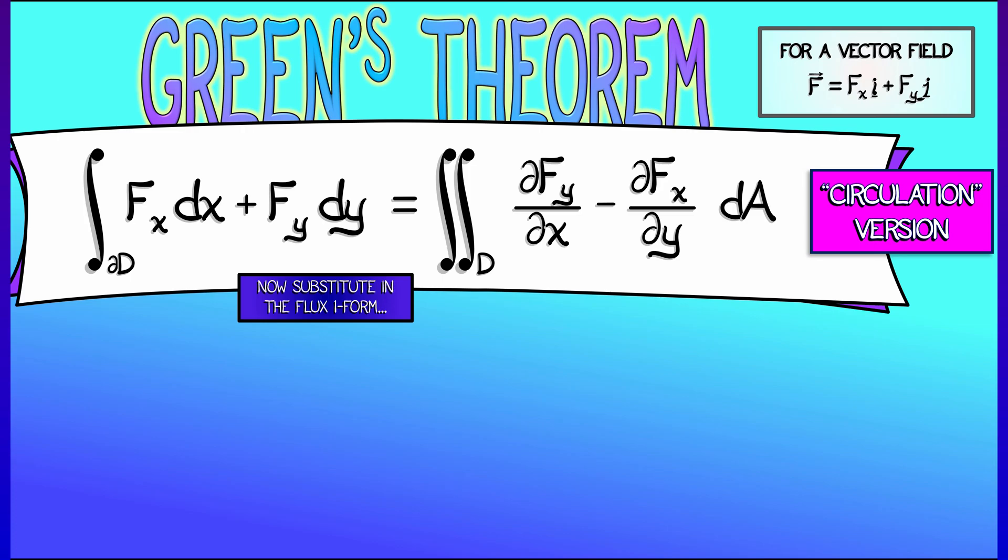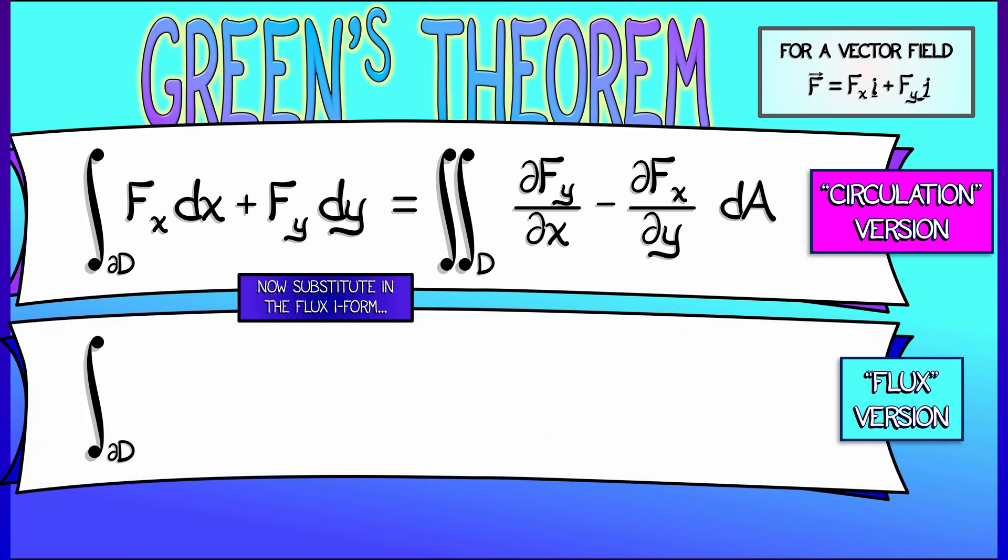But then substitute in the flux one-form and you get something that looks a little bit different. If we integrate the flux one-form, that is fx dy minus fy dx, integrate that over the boundary of the domain, then what does Green's Theorem say?